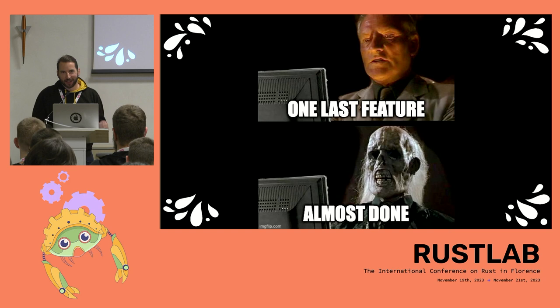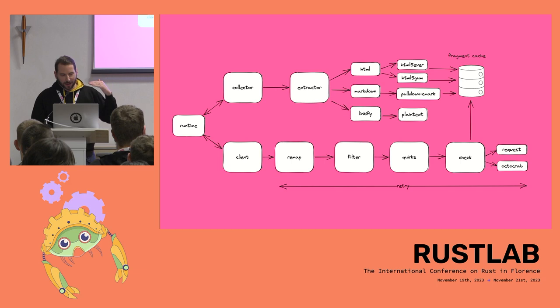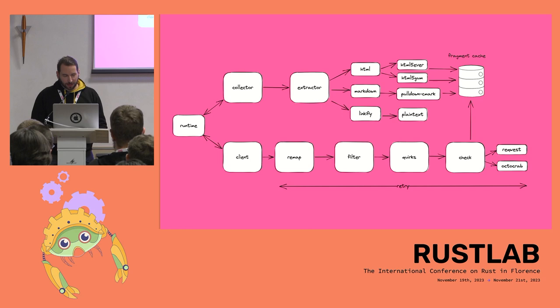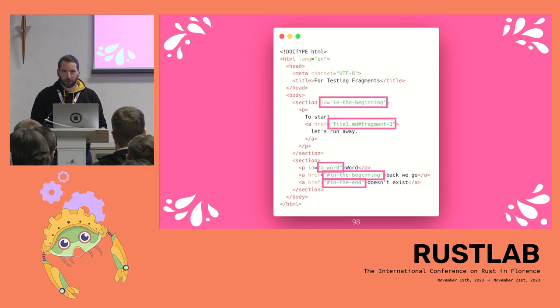You might be wondering how this thing looks. It's kind of boring code, but if you look at the architecture diagram, it looks extremely scary. You have a runtime which triggers a collector, the collector triggers an executor, and the executor supports different formats like HTML and markdown. We store some of that in a fragment cache. On the other side, a client does some remapping for internal URLs, filtering, and applies the quirks I showed you. Then it does the actual check. Fragments, by the way, are anchor links — you can link to them directly, so we support them.